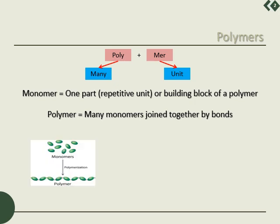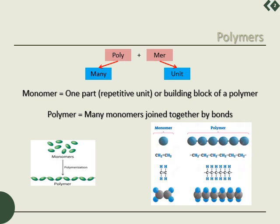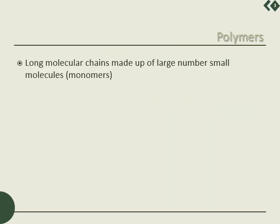The figure shows monomers undergoing the process of polymerization, forming a long chain of polymer. For example, polyethene — a famous polymer — the ethylene monomer undergoes polymerization and forms a long chain of polymer. So, polymers are long molecular chains made up of a large number of small molecules. Those small molecules or repetitive units are known as monomers.